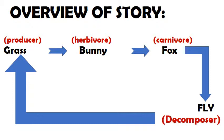Now I am going to tell you the overview of the story. First the grass — grass is the producer. Then the bunny eats the grass, so it's a herbivore. Then the fox comes; it eats the bunny because it's a carnivore. Then a fly comes; it eats the dead fox because it's a decomposer. And this cycle goes on and on.